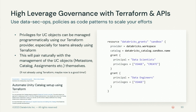High leverage governance is about doing more with less. You can use patterns like DataSecOps or policies-as-code to scale your efforts with Unity Catalog. Privileges for UC objects can be managed programmatically using our Terraform provider — especially great for teams already using Terraform. It pairs naturally with management of UC objects like Metastores, catalogs, and assignments. It's easy to build CI/CD pipelines that precisely control how permissions are established across your data estate.